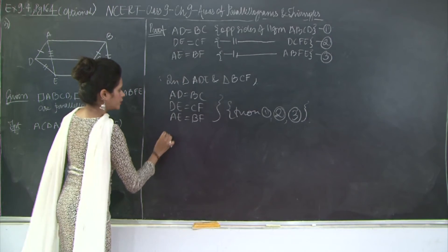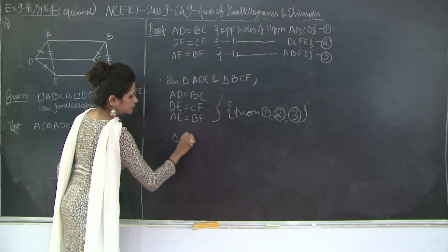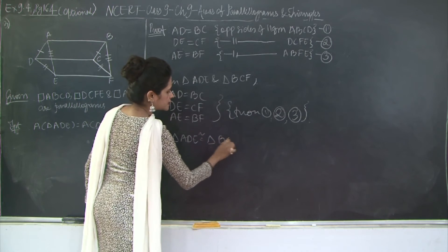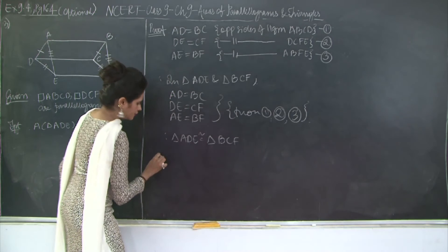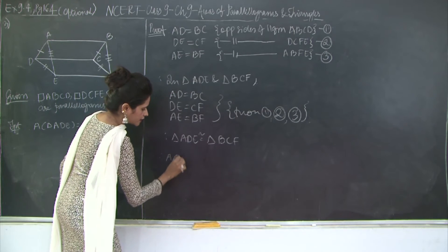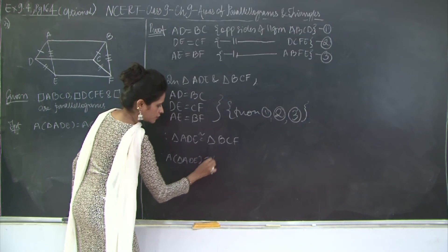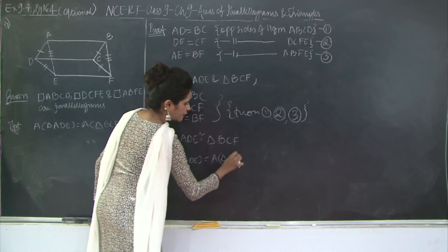Therefore, triangle ADE is congruent to triangle BCF. Therefore, area of triangle ADE is equal to area of triangle BCF.